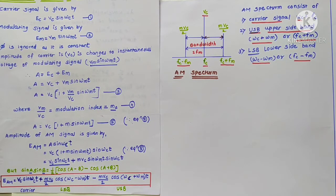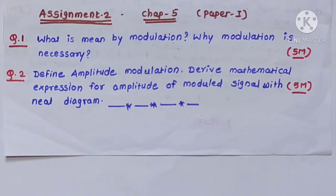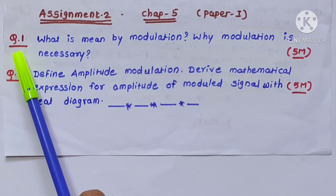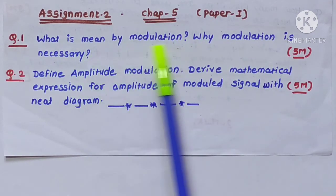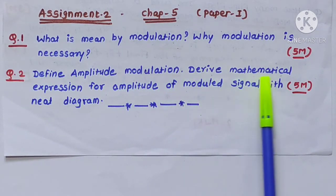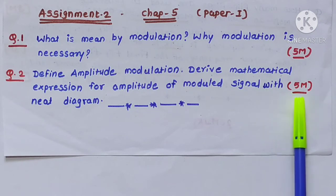In the next lecture, we will see the significance of the modulation index in amplitude modulation and drawbacks of amplitude modulation. Now, this is time for an assignment: Assignment 2, Chapter 5, Paper 1. Question 1: What is meant by modulation? Why is modulation necessary? (5 marks). Question 2: Define amplitude modulation. Derive the mathematical expression for the amplitude-modulated signal with a neat diagram. (5 marks). All students should send the answer sheet in PDF format — all assignments are compulsory.